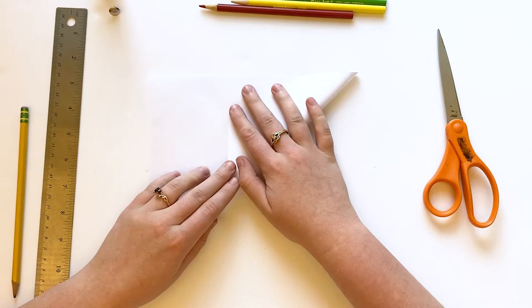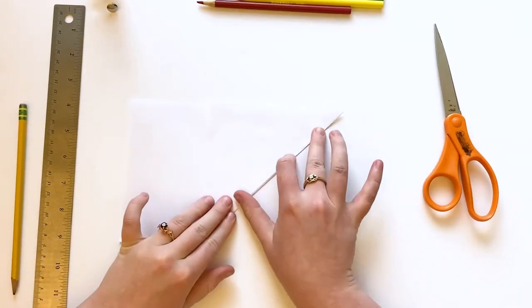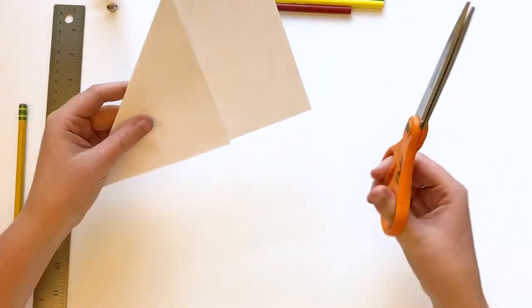Fold the corner of the paper to the opposite edge until it creates a folded triangle, then cut off the extra paper.